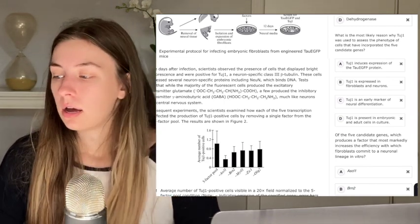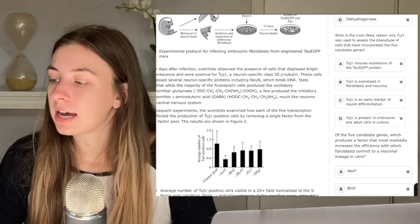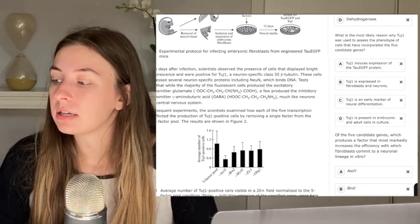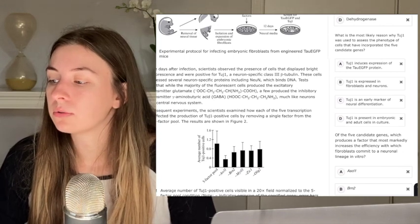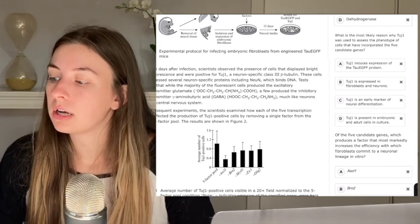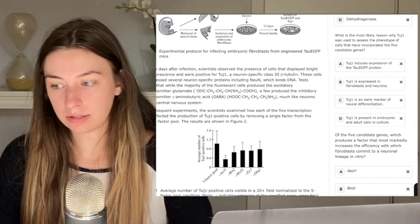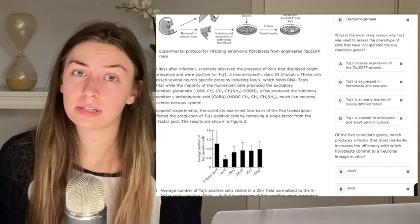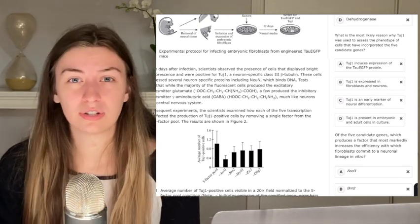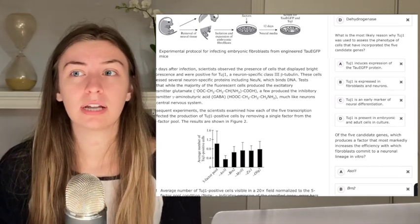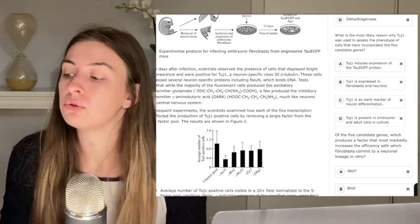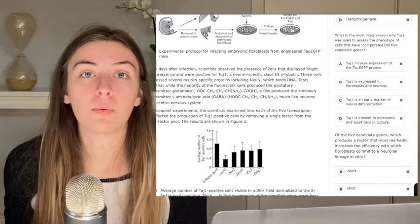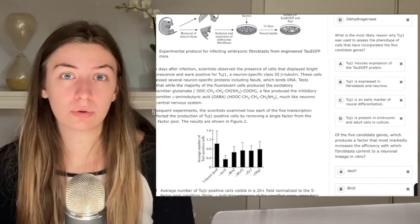Again, I'll give you an example of kind of what a lot of my students would do when they first start out. They would say, okay, this question is basically asking what's the most likely reason why TUJ1 was used in the five candidate genes? Okay, well, you just cut out some of the words and you also completely changed the meaning of the question. You also put TUJ1 into the candidate genes when you shouldn't have. So I don't want you to just clip out words to try to make the question stem shorter either.